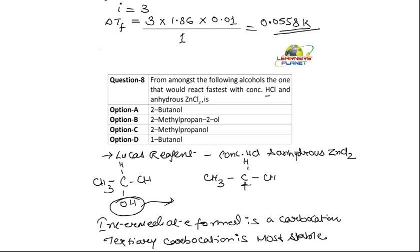2-butanol is not tertiary alcohol. 1-methyl-propen-2-ol. Let's write the structure of this. So, it is propane. And there would be CH3, sorry, it is 2-methyl. So, this is 1, 2. 2-methyl-propen-2-ol. So, here the carbocation form would be tertiary.